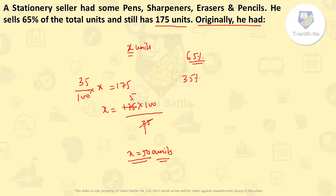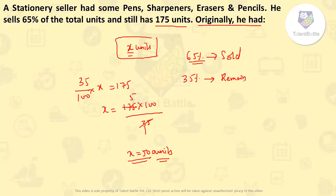So what we have done: we have taken total units as X. They told that 65% were sold, so definitely 35% were remaining. And they also told that remaining units were 175. So the answer for this question is 500 units.